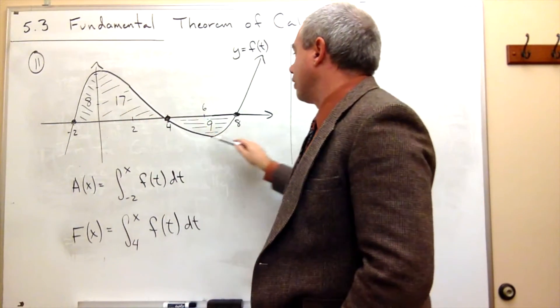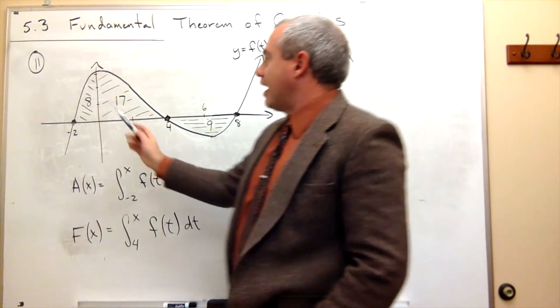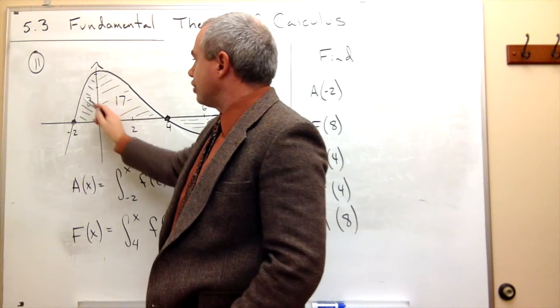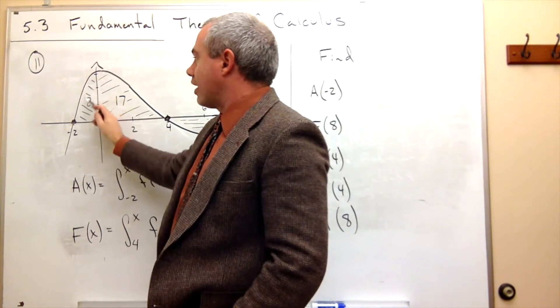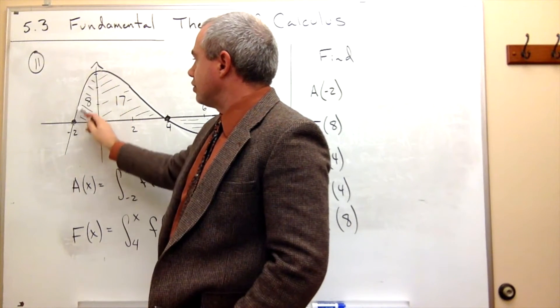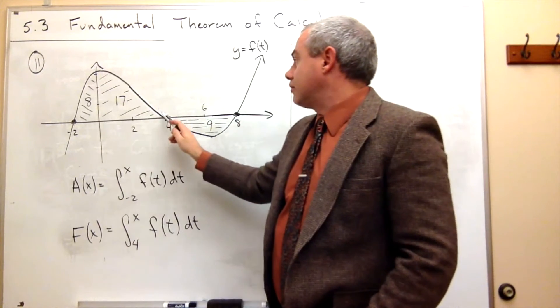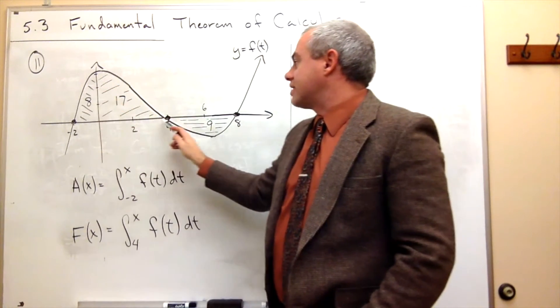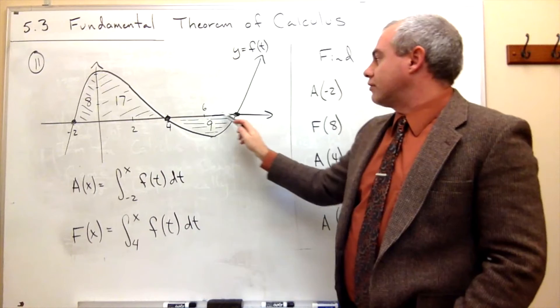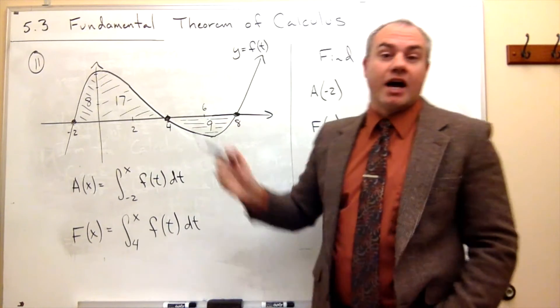You see this graph is going up, going down, going up. And in this little region that I shaded in right here, there's an area of 8. So this little region has an area of 8. This region right here has an area of 17. And this region right here has an area of 9.